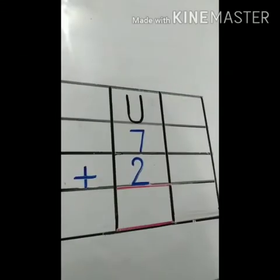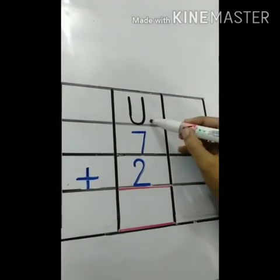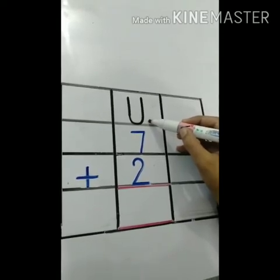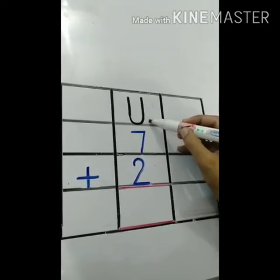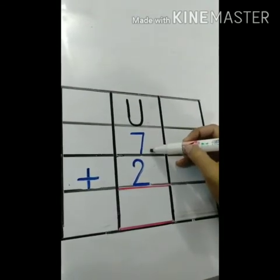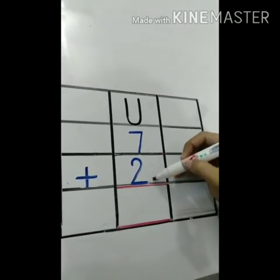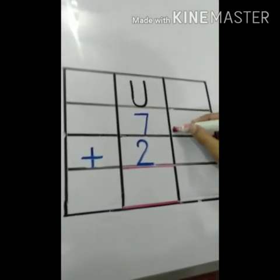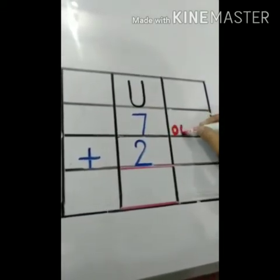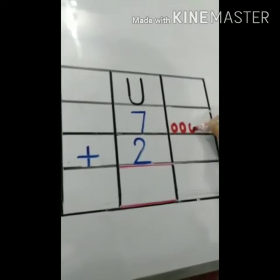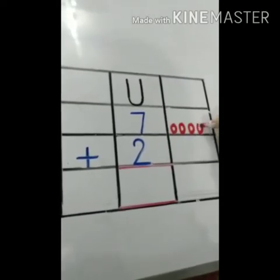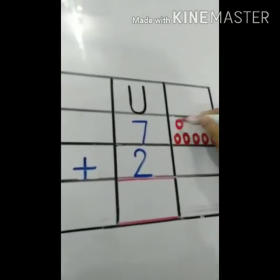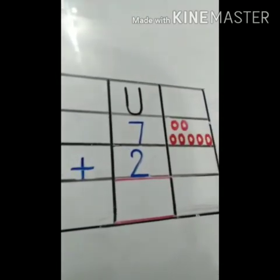So now let's start. What is this? This is U — U stands for unit. And what is this? This is number seven. And this is number two. So now let's make the balls. One, two, three, four, five, six, seven.